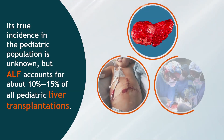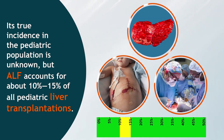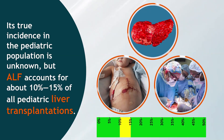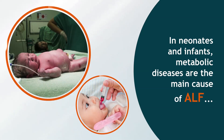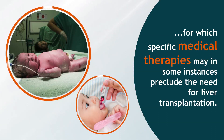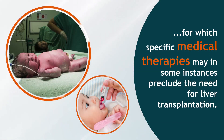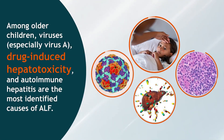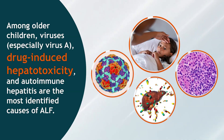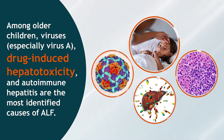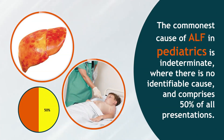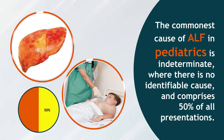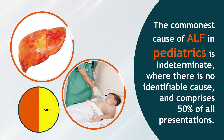Its true incidence in the paediatric population is unknown, but ALF accounts for about 10–15% of all paediatric liver transplantations. In neonates and infants, metabolic diseases are the main cause of ALF, for which specific medical therapies may in some instances preclude the need for liver transplantation. Among older children, viruses (especially hepatitis A), drug-induced hepatotoxicity, and autoimmune hepatitis are the most identified causes. The commonest cause of ALF in paediatrics is indeterminate, with no identifiable cause, comprising 50% of all presentations.